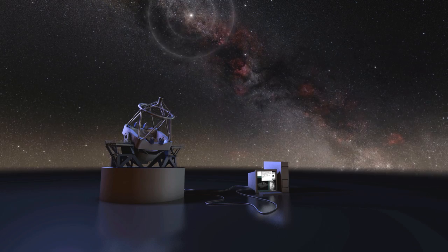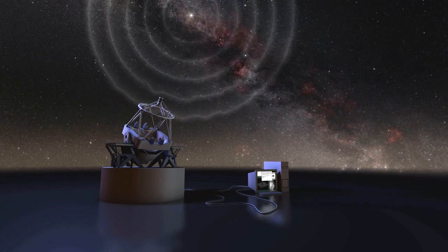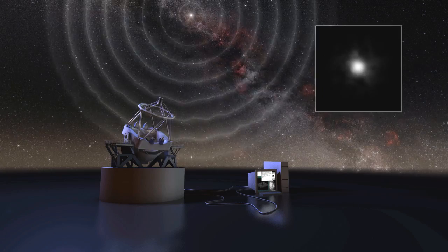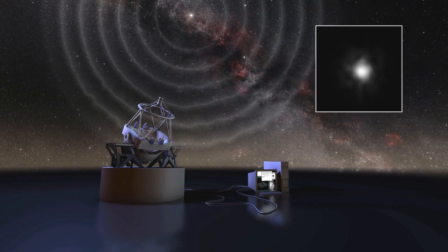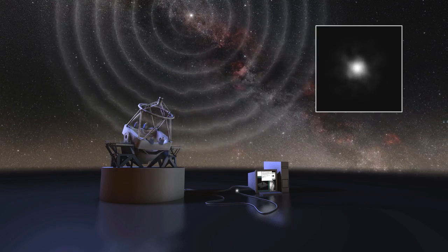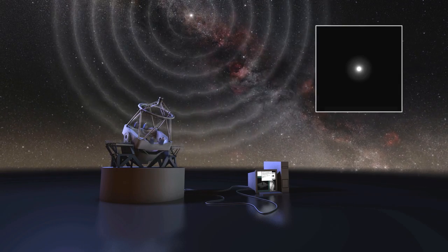But the Earth's atmosphere blurs the view, so we also need a clever optical system, adaptive optics, to take out this blurring effect as much as possible, and bring most of the starlight together into one bright dot.